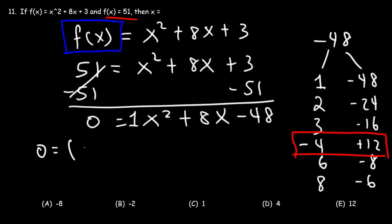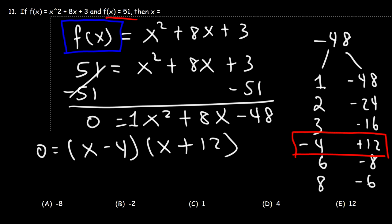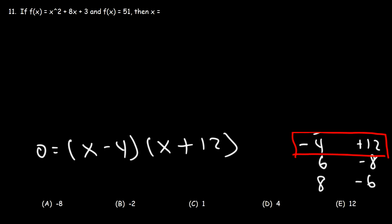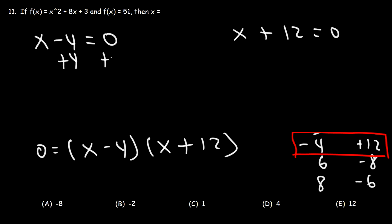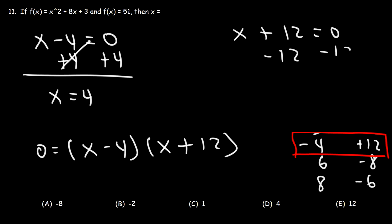To factor it, we get 0 equals x minus 4 times x plus 12. We set each factor equal to 0 according to the zero product property. For the left factor, add 4 to both sides to get x equals 4. For the right factor, subtract 12 from both sides, so x is negative 12.